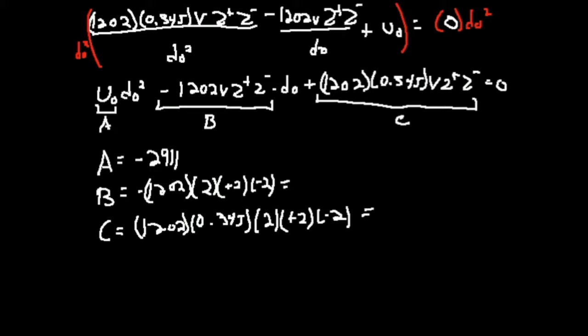So my B is going to be 1202 times two times two times negative two, but those negatives are going to cancel, and so my B is going to be positive 9616. My C is going to be 1202 times 0.345 times two times two times negative two, and so this is going to be negative 3317.52, and I'm going to plug this into a quadratic formula calculator.